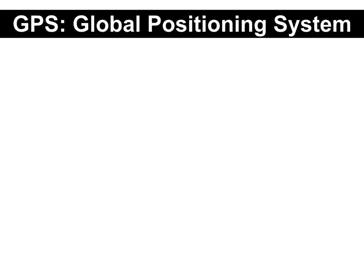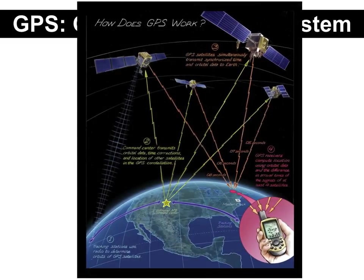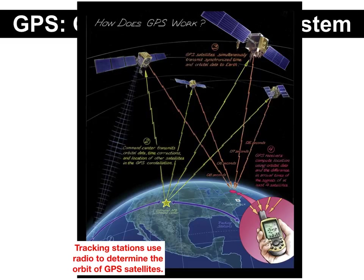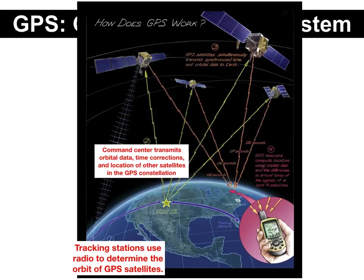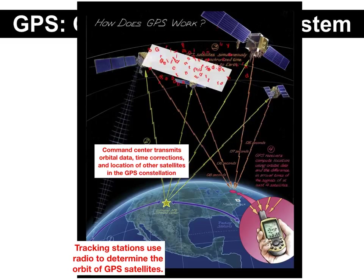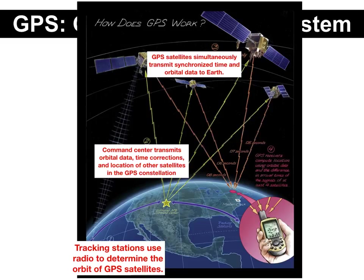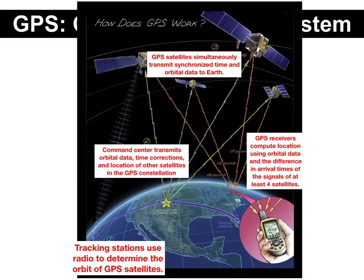Our final topic is global positioning systems. Tracking stations use radio to determine the orbit of the GPS satellites. The command center transmits orbital data, time correlations, and locations of other satellites in the GPS constellation. GPS satellites simultaneously transmit synchronized time and orbital data back to the Earth. GPS receivers compute location using the orbital data and the difference in arrival times of the signals of at least four satellites. You have to be in contact with four satellites, and there are many GPS satellites so there will always be four available.